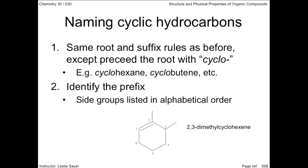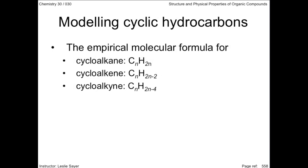Once again, I cannot overstate the importance of practicing these skills to firmly memorize the rules of drawing and naming these hydrocarbons. The empirical molecular formula for cycloalkane is CnH2n. Cycloalkene is CnH2n-2. Cycloalkyne is CnH2n-4. Note that cyclic alkanes are isomers of alkenes, and that cyclic alkenes are isomers of alkynes.